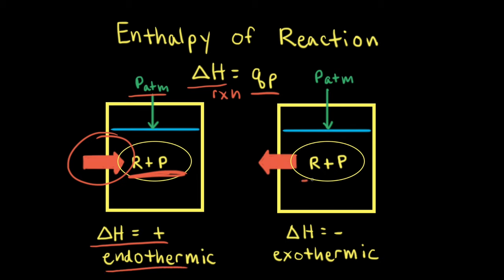If heat flows from the system to the surroundings, the reaction gave off energy. Therefore, the change in enthalpy for the reaction is negative, and this is called an exothermic reaction.